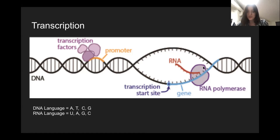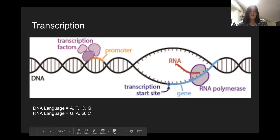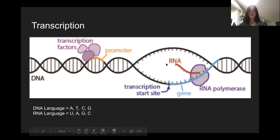RNA polymerase transcribes DNA into RNA by converting the DNA language — A, T, C, G — into RNA. If you have an A on the DNA side, that's transcribed into a U in RNA. T is transcribed into A, C into G, and G into C. At the end of this process, you have a single-stranded RNA.